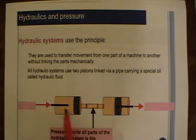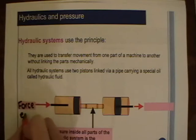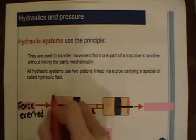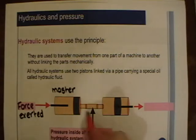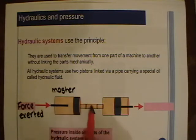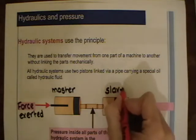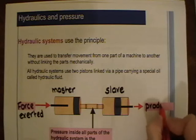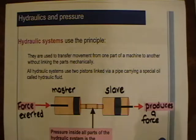Hydraulic systems use two pistons linked via a pipe containing a special oil called hydraulic fluid. You exert a force on the first piston, which is called the master piston. That produces a pressure which is transmitted through the liquid to the second piston, called the slave piston. The slave piston produces a force which can be used to do some kind of job, like lifting.